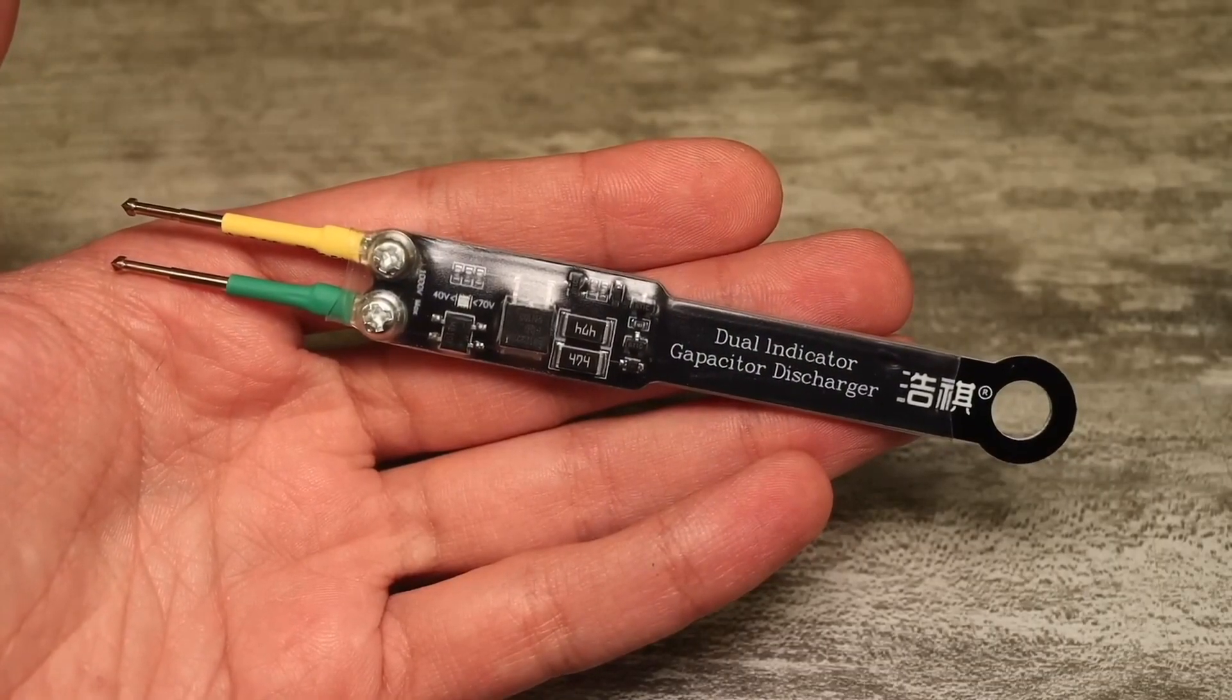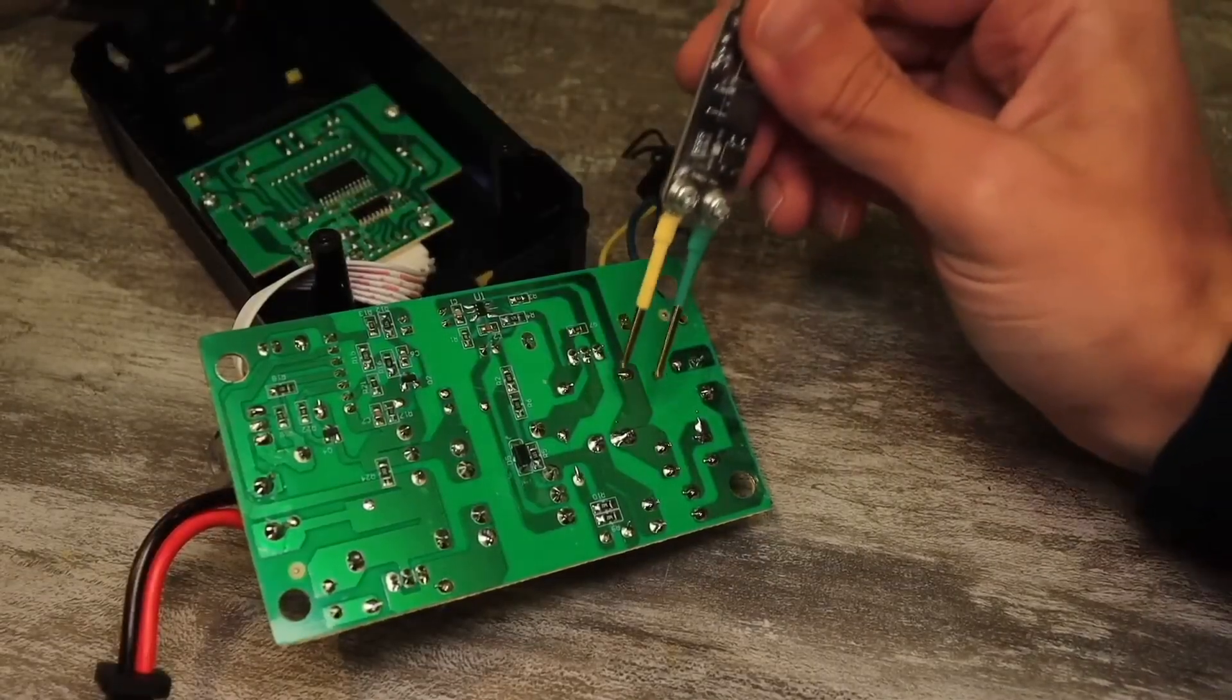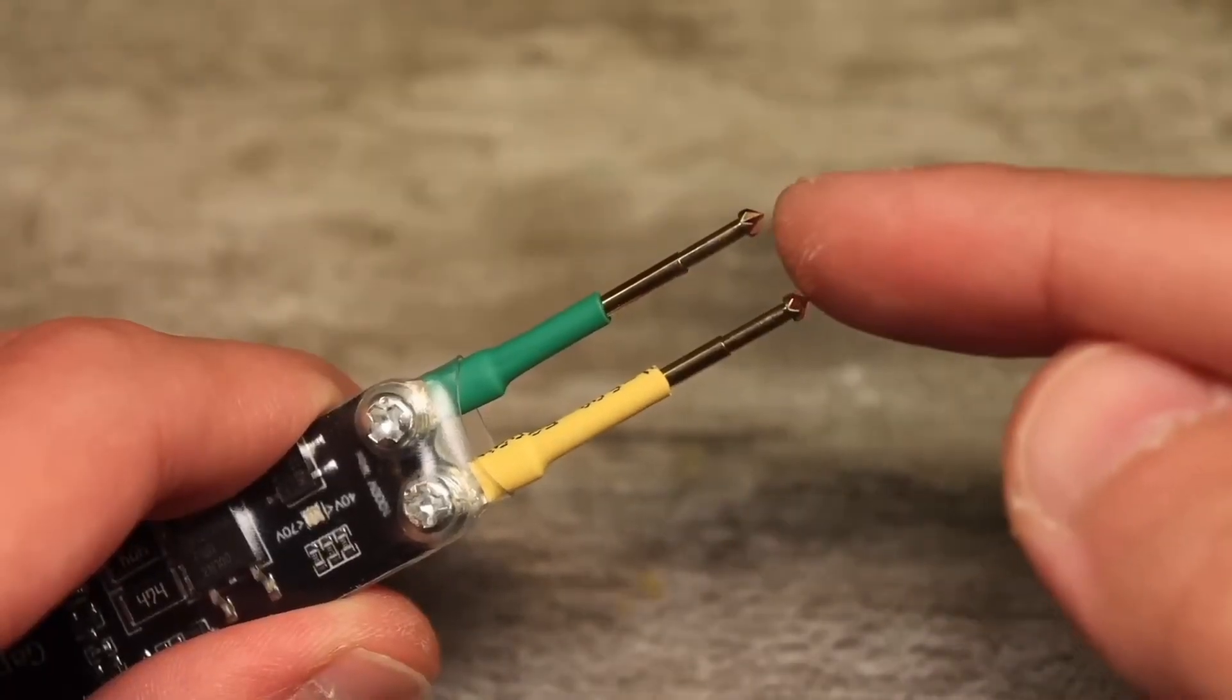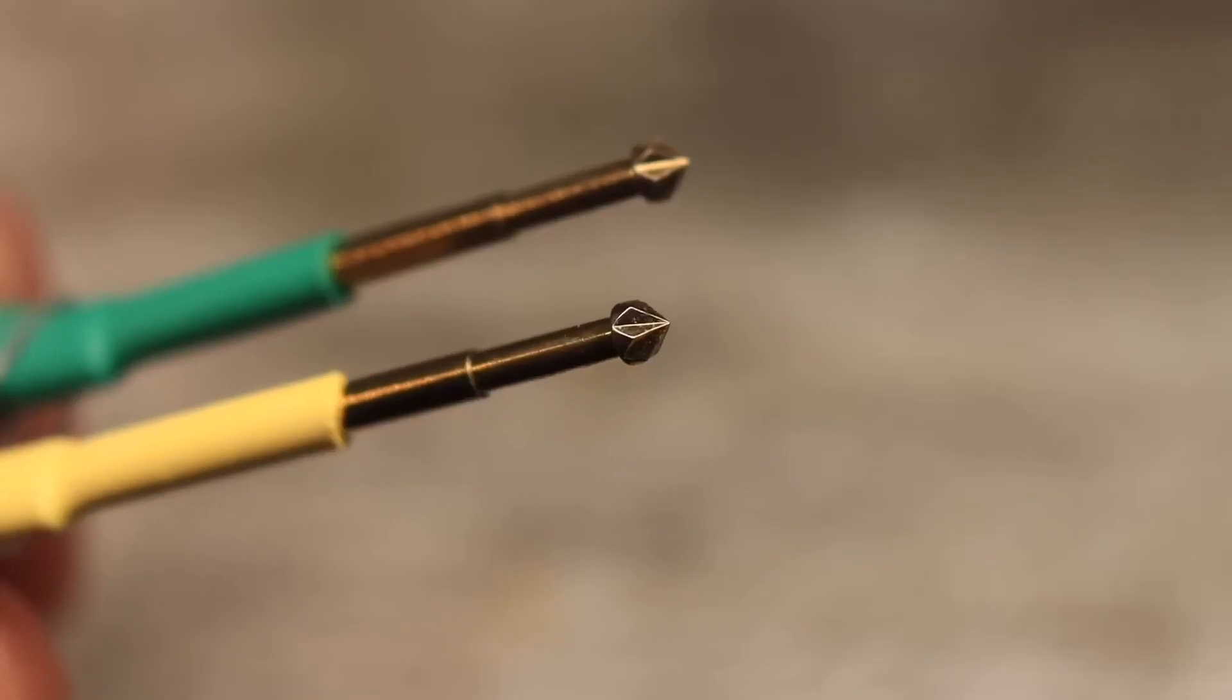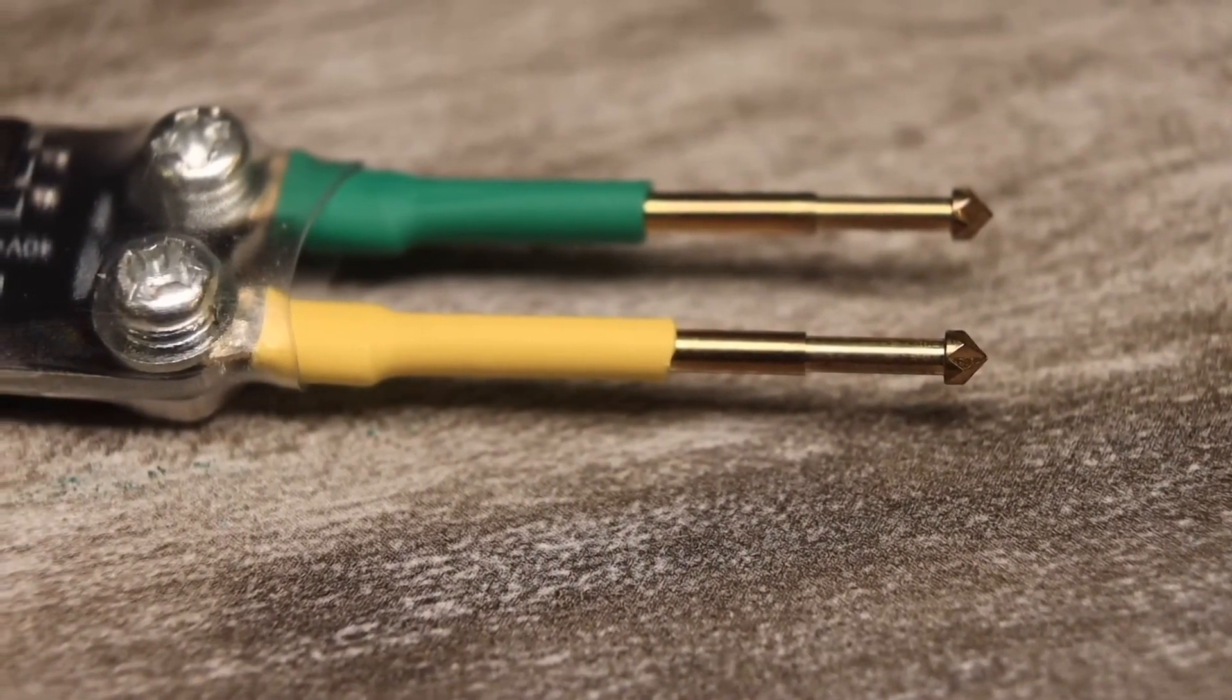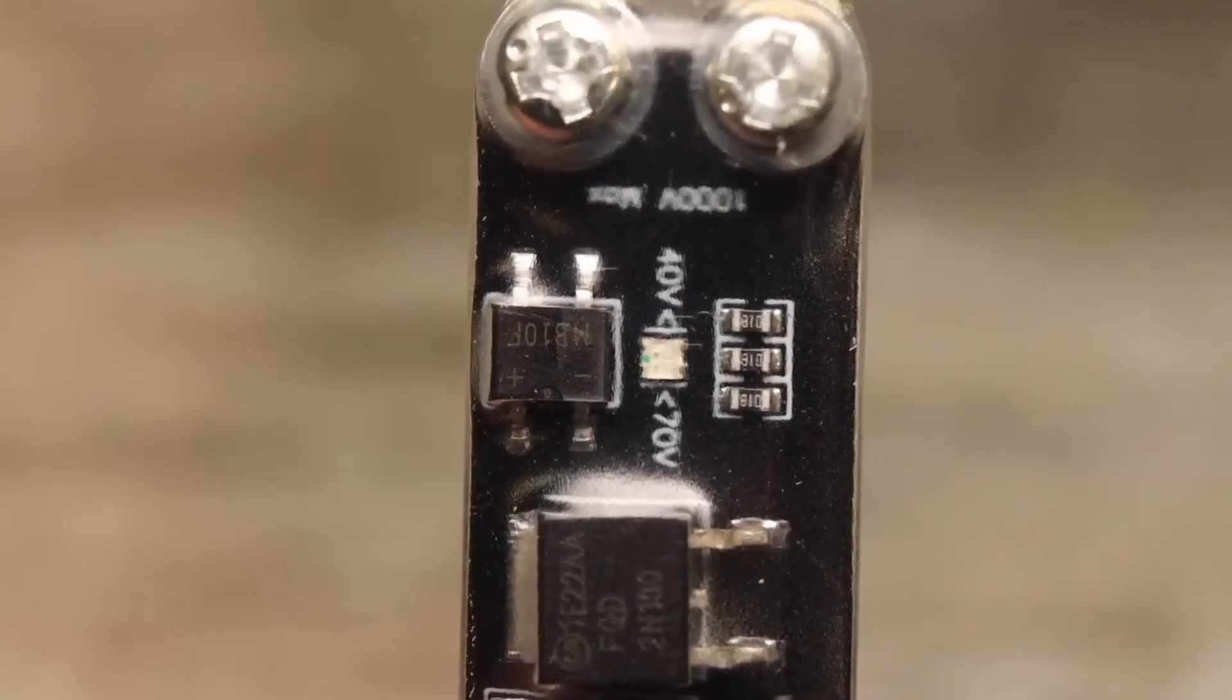A capacitor discharger is a great thing if you often work with switching power supplies. This device is designed for quickly and safely discharging residual voltage from capacitors. The tool has two spring-loaded probes with serrated tips to ensure a reliable contact. For this gadget, the polarity of the power supply and the type of current, AC or DC, don't matter, since there's a rectifier at the input.